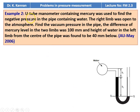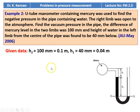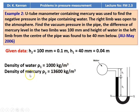Example number 2. A U-tube manometer containing mercury was used to find the negative pressure in a pipe containing water. The right limb was open to the atmosphere. Find the vacuum pressure in the pipe. The difference in mercury level in the two limbs is 100 millimeters and the height of water in the left limb from the center of the pipeline is 40 millimeters. H₂ is 0.1 meter, H₁ is 0.04 meter, density of water is 1000 kilograms per meter cube, and density of mercury is 13,600 kilograms per meter cube.